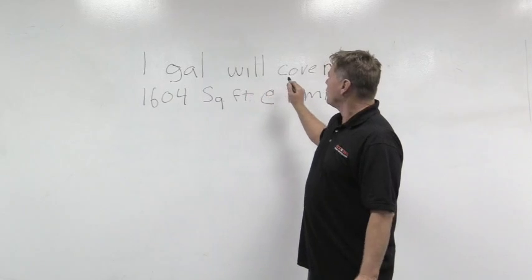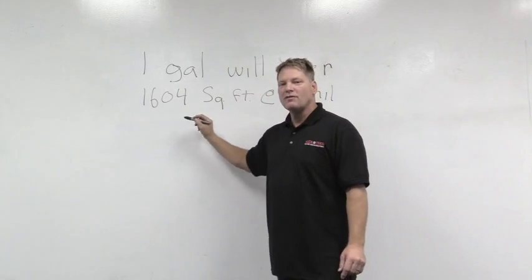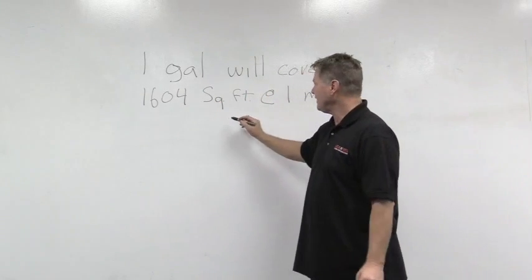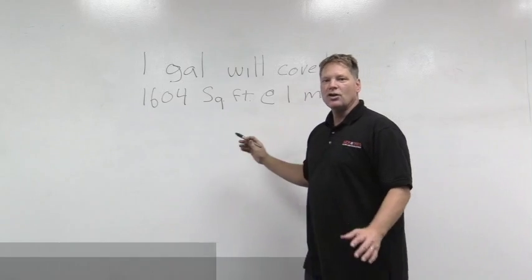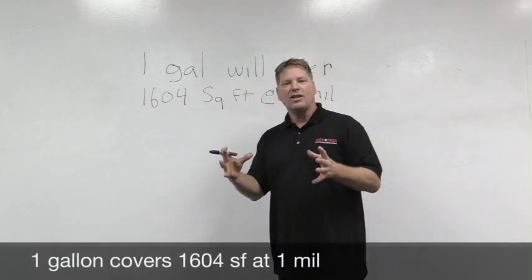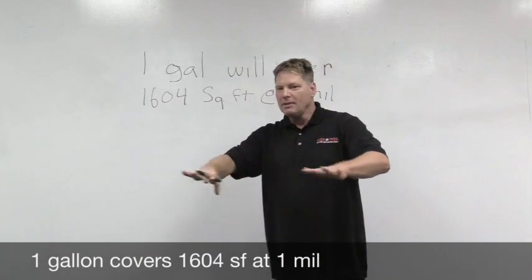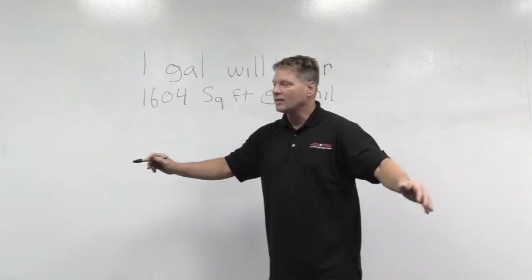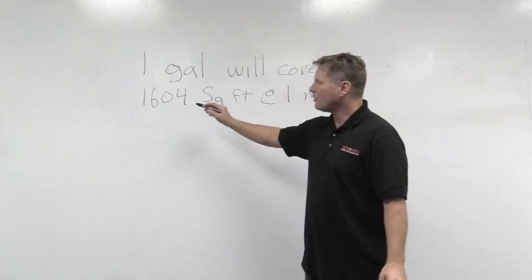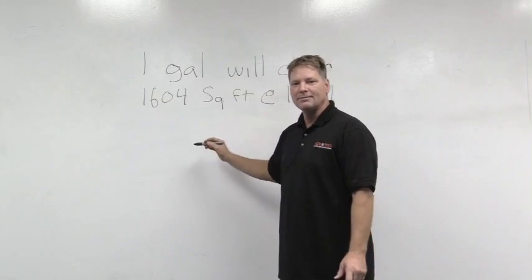One gallon will cover 1,604 square feet at one mil. So if you could take a gallon of any liquid and get it to be one mil everywhere and spread it out evenly, it would cover 1,604 square feet.